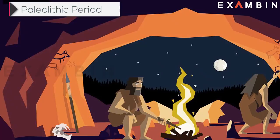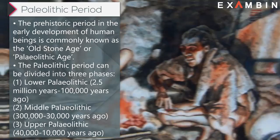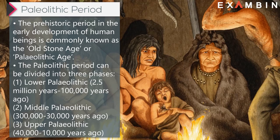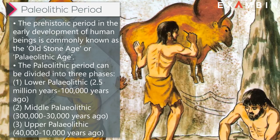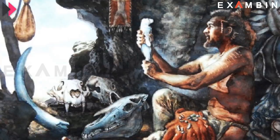First we will see about the Paleolithic period. The prehistoric period in the early development of human beings is commonly known as the Old Stone Age or Paleolithic Age. The Paleolithic period can be divided into three phases: Lower Paleolithic (2.5 million years ago to 1 lakh years ago), Middle Paleolithic (3 lakh years ago to 30,000 years ago), and Upper Paleolithic (40,000 years ago to 10,000 years ago).